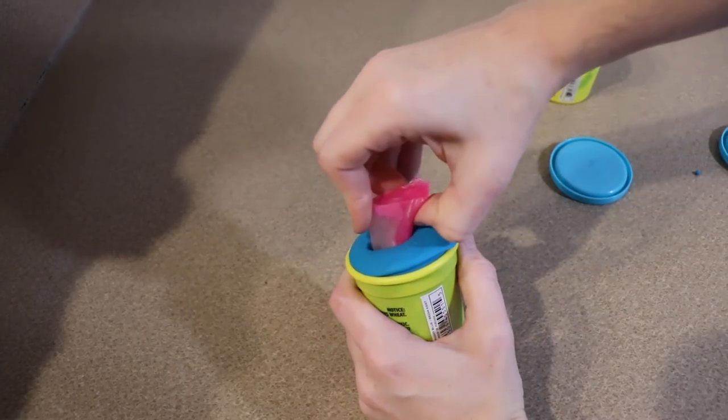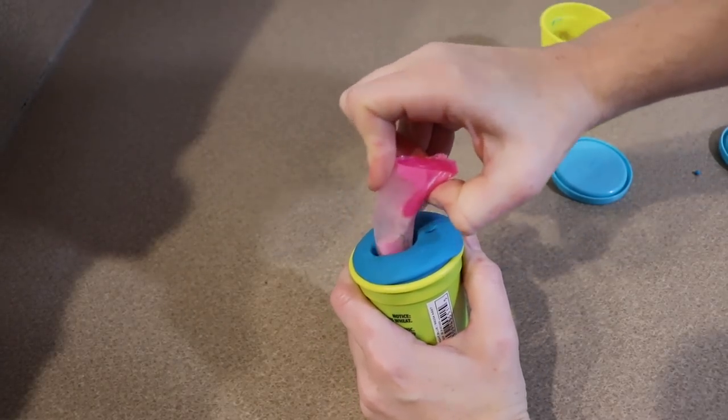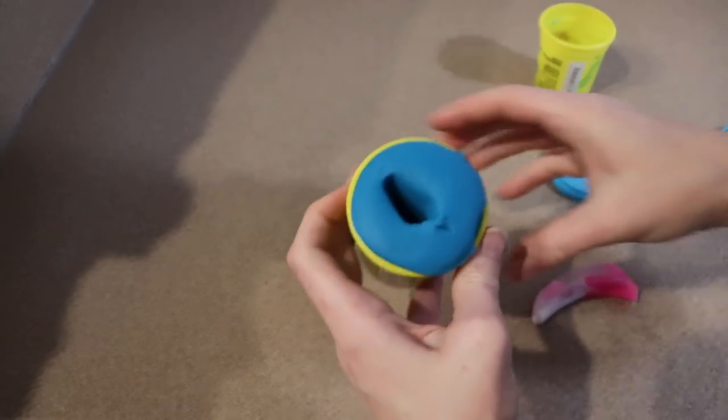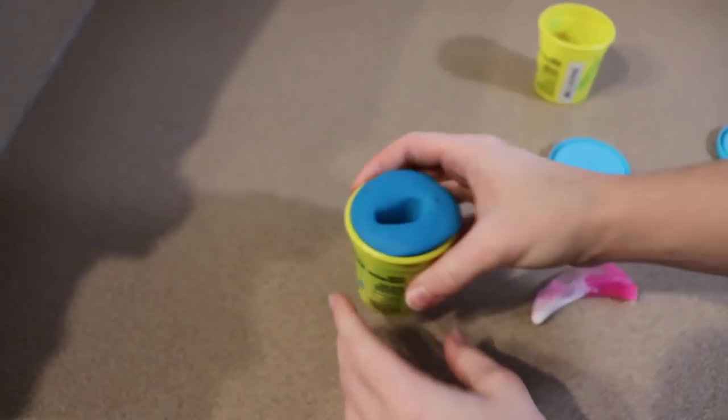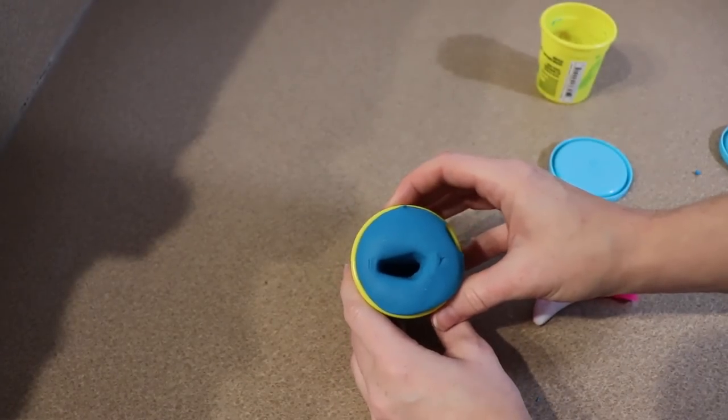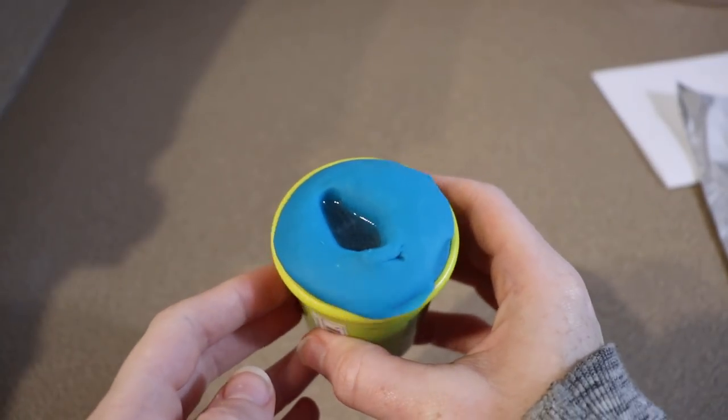You want to be careful not to touch the clay as you're pulling it out because you'll mess up the shape that you have inside. Now after pulling the claw out of the clay, I'm going to take my mixture of resin and pour it into that hole.